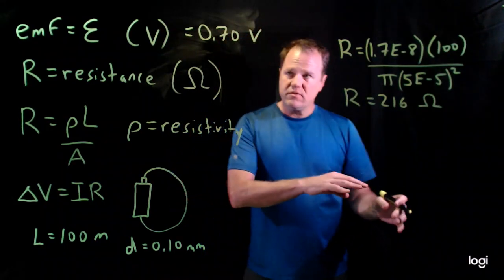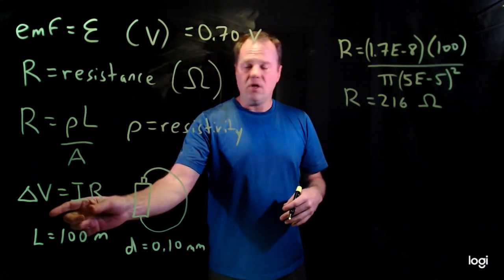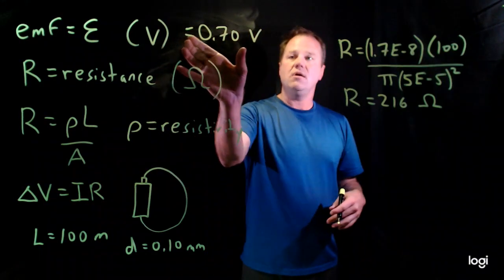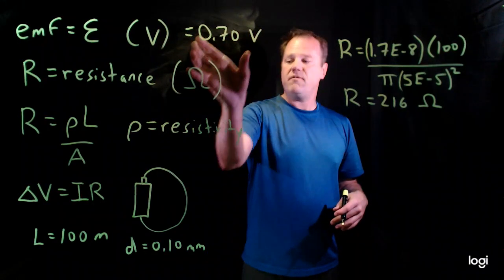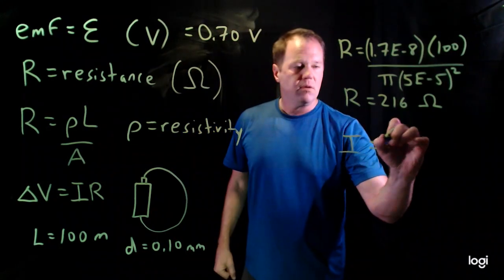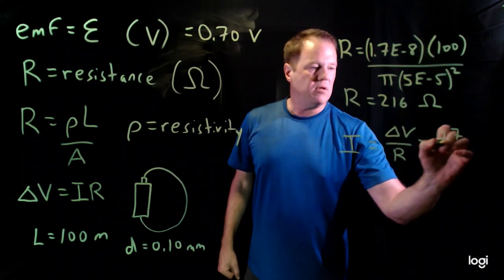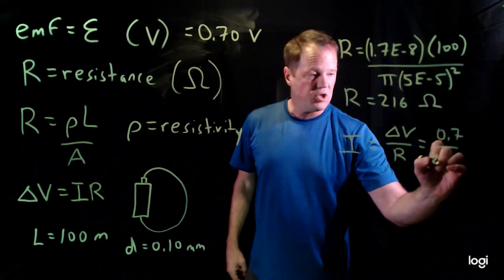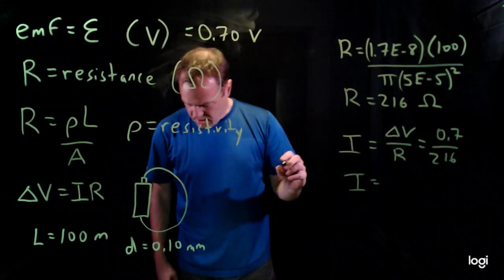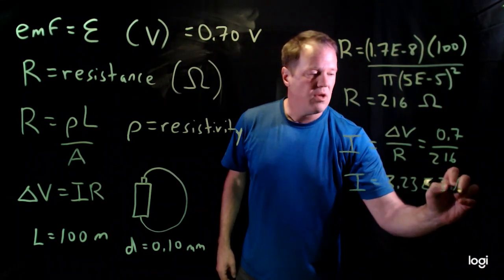So now that I know the resistance of the wire and I know the EMF of the battery, I can calculate the current using Ohm's law. So this number right here just becomes the EMF of the battery. And I can just solve for I there. So just a tiny bit of algebra, current will be potential difference divided by resistance. So 0.7 divided by 216. I throw that into my calculator and I get 3.23 times 10 to the minus 3 amps.